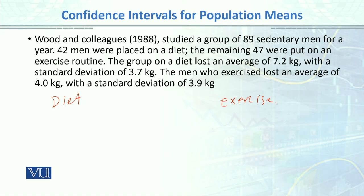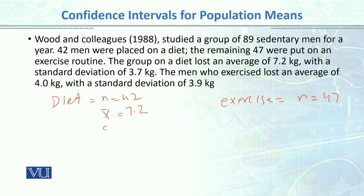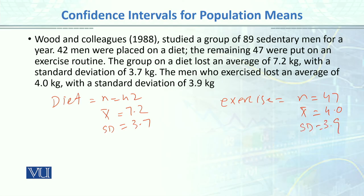Another example: Wooden and colleagues studied a group of 89 sedentary men for a year. 42 men were placed on a diet and the remaining 47 were put on an exercise routine. The group on a diet lost on average 7.2 kg with a standard deviation of 3.7 kg, while the men who exercised lost an average of 4 kg with a standard deviation of 3.9 kg.